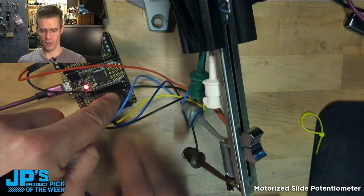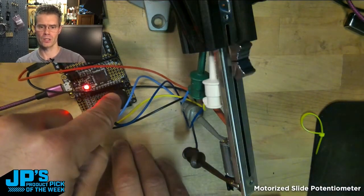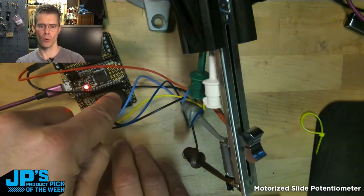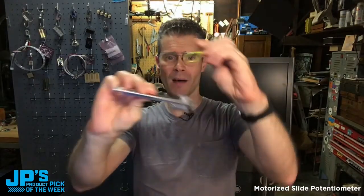So now if I hit this four times, it'll come back to this position. I have four saves, so one, two, three, four, back to that new position. It is the motorized slide potentiometer.